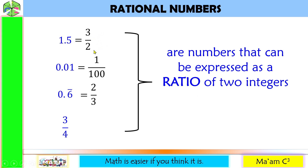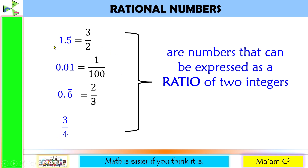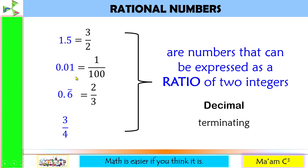The numbers 3, 2, 1, 100, 2, 3, 3, and 4 are all integers. Rational numbers can also be expressed as decimals. We have here a terminating decimal, and this one is an example of a non-terminating, repeating decimal.